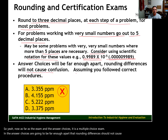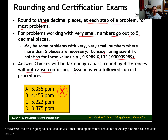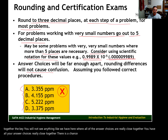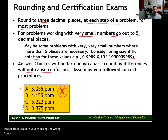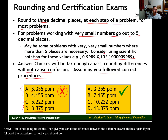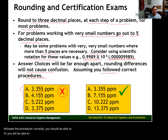You shouldn't have any mistakes on the exam because you rounded differently than the test developer rounded when putting together the key. You will not see answer choices that are all really close together, where a rounding difference between you and the test creator could result in choosing the wrong answer. They give you significant difference between the different answer choices. If you followed the procedures correctly, you will be able to select the correct answer on certification exam questions. If you have any questions about rounding, please let me know.